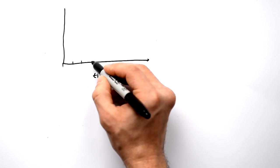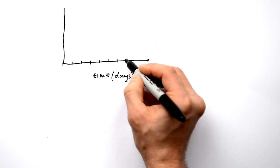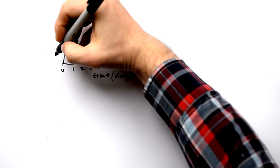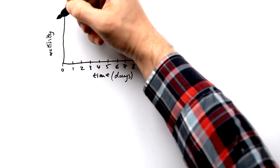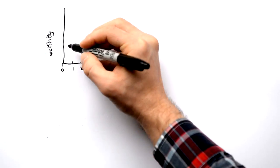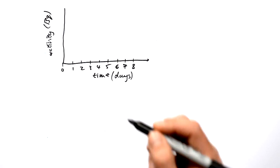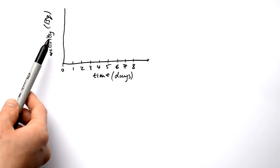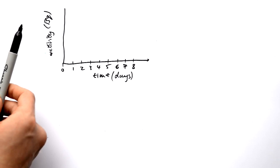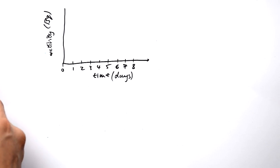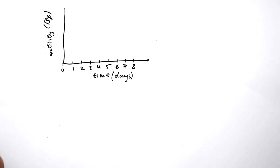One, two, three, four, five, six, seven, eight days. And then we have activity — radioactivity — at the side, measured in Becquerel. Incidentally, activity doesn't have to be counts per second; it could be counts per minute, counts per hour, counts per whatever time you want, depending on how active the isotope is.